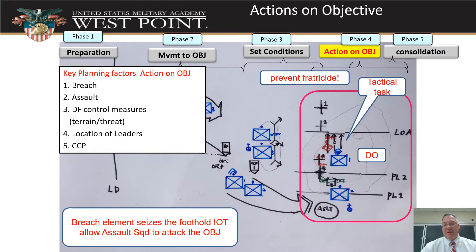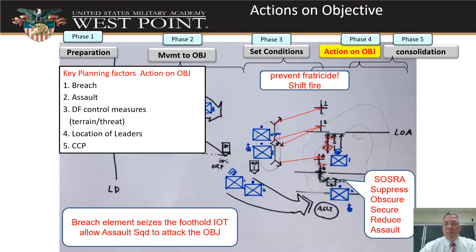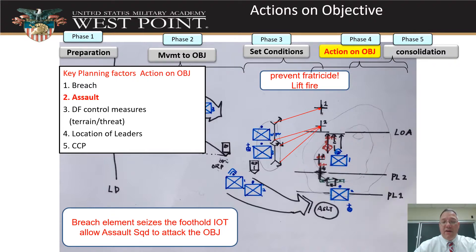We have to make sure that we prevent fratricide, so we can use some control measures for that. We've got to control our direct fire — we've given some target reference points on here to show our two support by fire positions and where their left and right limits are. We can hit our shift fire, and use those again to give left and right limits to our support by fire positions. While our breach goes on and we employ breach fundamentals, we can then lift fire during the assault phase. We use our direct fire control measures to show our support by fire where they're going to place their fires to prevent fratricide.